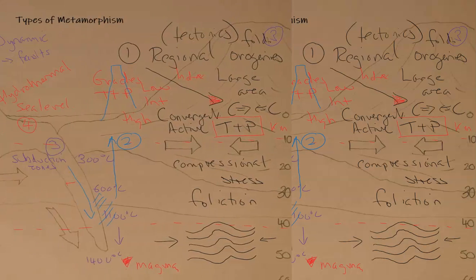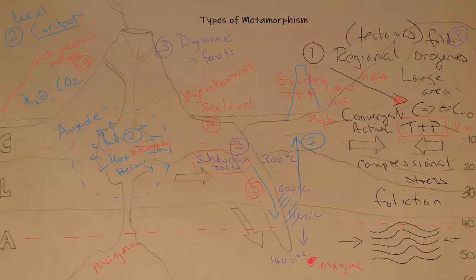The fifth type is subduction zone metamorphism. This encompasses various grades — from burial of sedimentary strata at shallow depths all the way through increasing temperatures and pressures as the strata subducts deeper. You get an ever-changing sequence of metamorphic facies from shallow to deep, with different grades corresponding to those facies, main index minerals, and indexed metamorphic rocks.